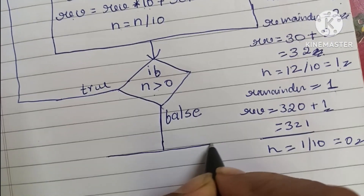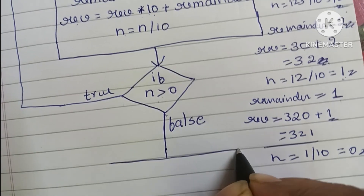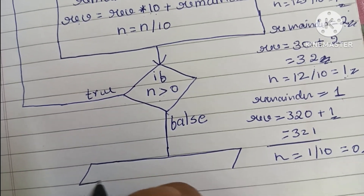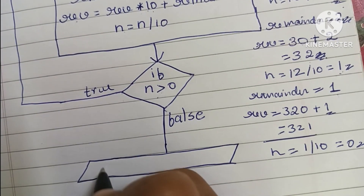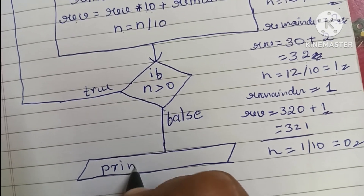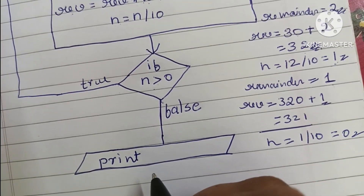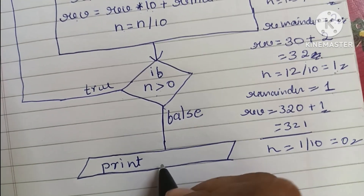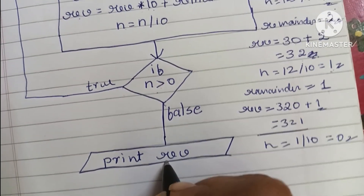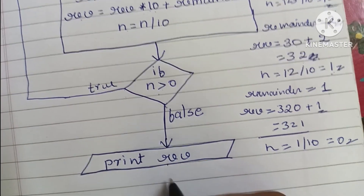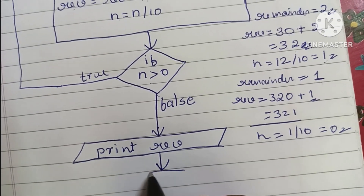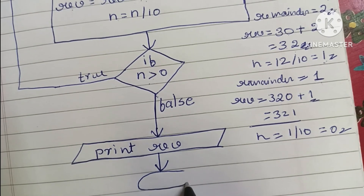Now we print the reverse value. Output is always written within a parallelogram shape, so we draw a parallelogram and write the reverse value inside. Next we stop the flowchart using the stop statement.